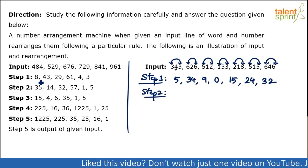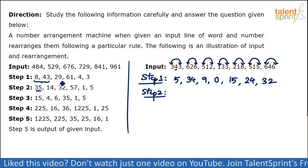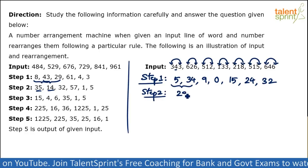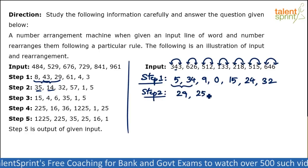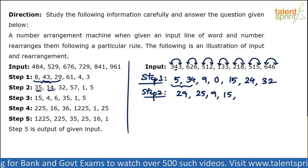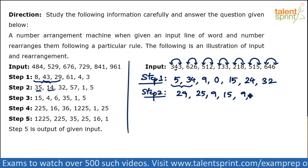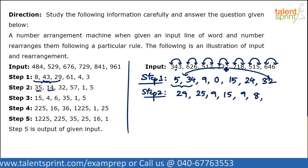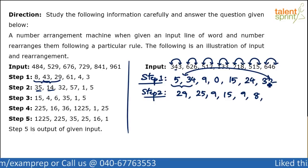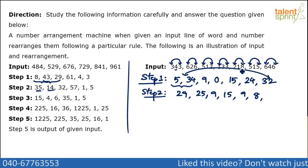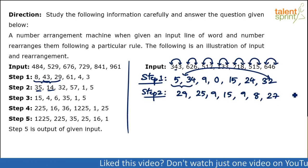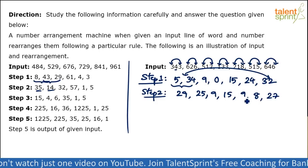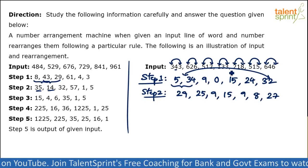For step 2, we take the difference of consecutive numbers. 5 and 34: difference is 29. 34 and 9: difference is 25. 9 and 0: difference is 9. 0 and 15: difference is 15. 15 and 24: difference is 9. 24 and 32: difference is 8. And since the input has 7 numbers, we pair the last number back with the first: 32 and 5, difference is 27. So step 2 gives: 29, 25, 9, 15, 9, 8, 27.